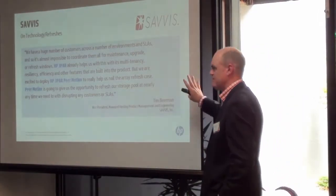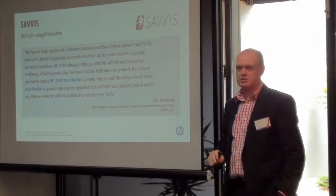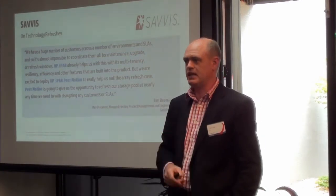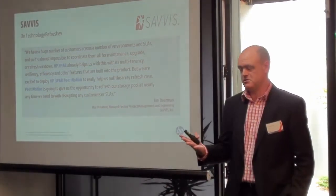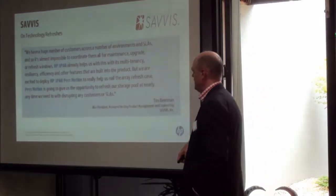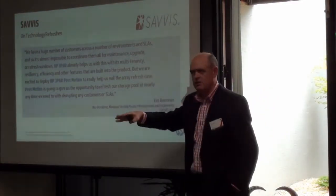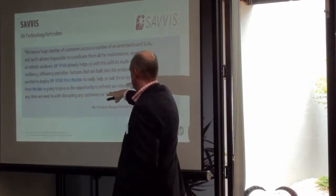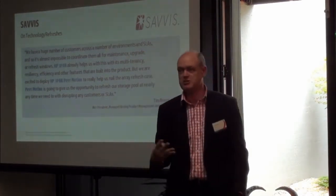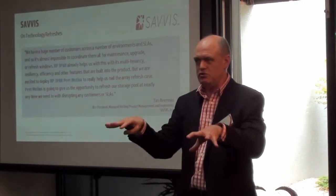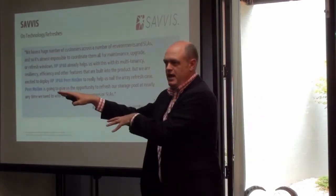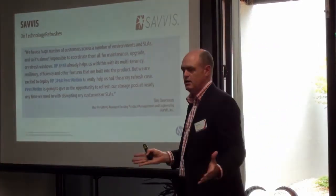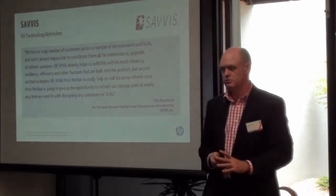Savas are what you might call a public cloud provider. They run a huge public cloud and also a dedicated private cloud for many large customers in Australia. They have a Singapore data centre with a lot of 3PARs. For them, peer motion gave them investment protection — they could have old 3PAR alongside new 3PAR, and as technology moved ahead, they were able to coexist and move data non-disruptively between old and new models, which was critical for their non-disruptive service.